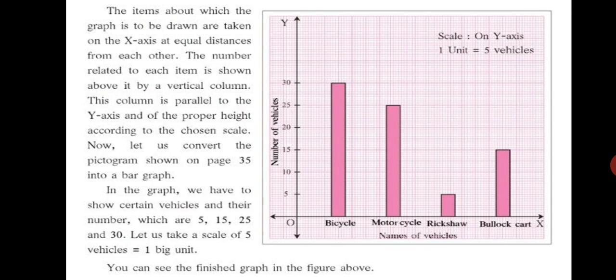So, the items about which the graph is to be drawn are taken on the x-axis at equal distance from each other. This is very important. The boxes that you are drawing should be at equal distance from each other. So, always leave one one box and draw. The number related to each item is shown above by a vertical column. This column is parallel to the y-axis and of the proper height according to the chosen scale. Now, what does scale mean? Scale is always on y-axis. The items you represent on x-axis and the scale is on y-axis.